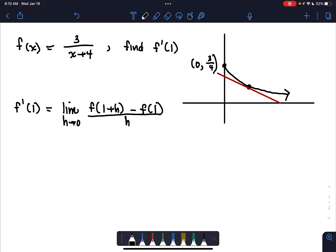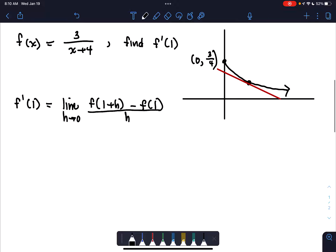So remember that the derivative, the instantaneous rate of change at 1, is given by this limit: limit as h approaches 0 of f(1+h) minus f(1) all over h.